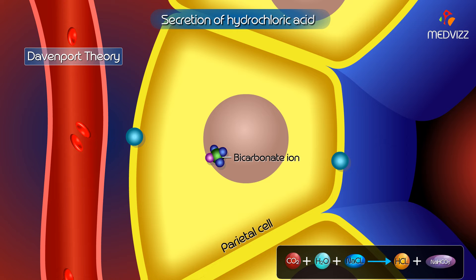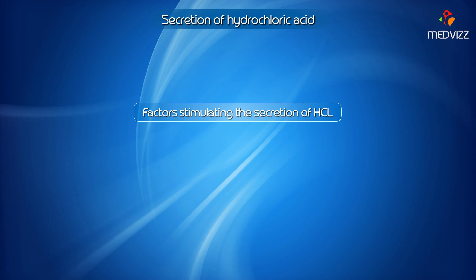the bicarbonate ion from the parietal cell enters the blood and combines with sodium to form sodium bicarbonate. Factors stimulating the secretion of hydrochloric acid are gastrin, histamine, and vagal stimulation.